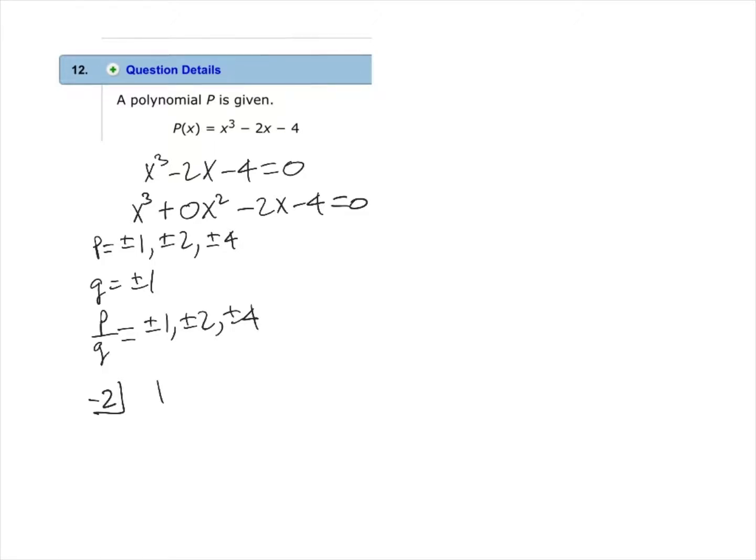We will write the coefficients for the polynomial out to the right of negative 2. Leave a space and draw a line. We drop the 1 underneath the line. Then multiply minus 2 times 1. This gives us minus 2.